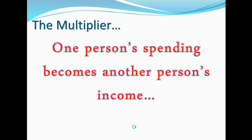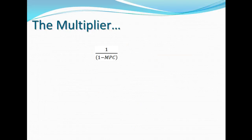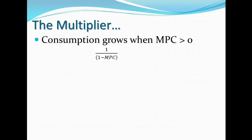So the multiplier — it's the idea that when you spend money, it gets multiplied throughout the economy because the next person is going to take the money you gave them and spend some of that. The part they save is the marginal propensity to save and the part they spend is the marginal propensity to consume. The multiplier is 1 over 1 minus the marginal propensity to consume. This is how we calculate the multiplier.